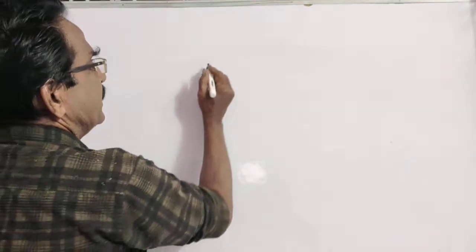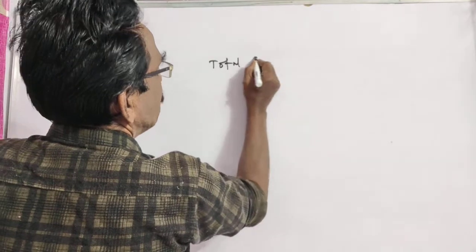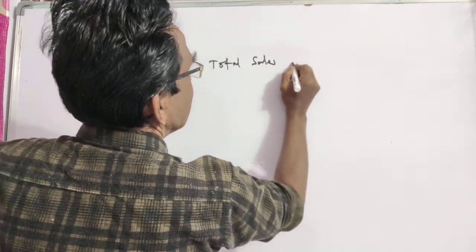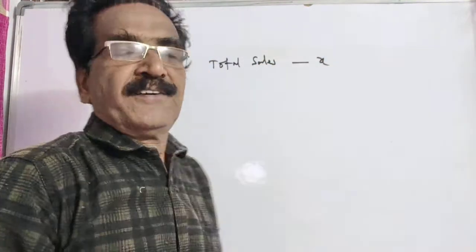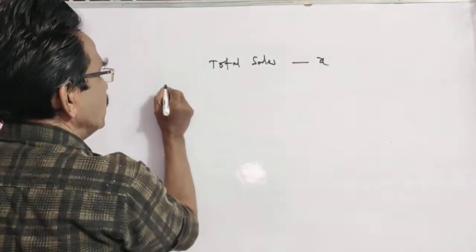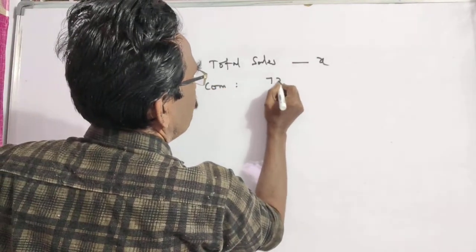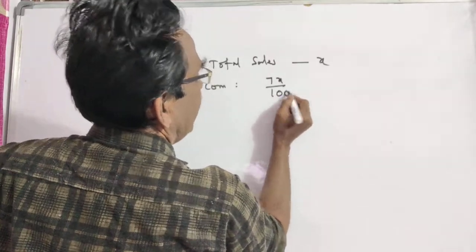See, here is the first case. Let us say the total sales is X. In the first case, how much commission does he get? He gets a commission of 7%, so his commission is 7% of X, 7% of total sales.